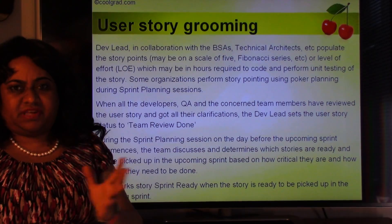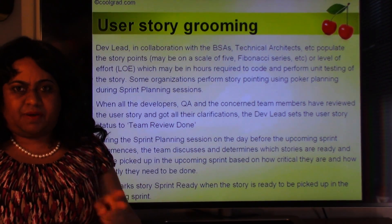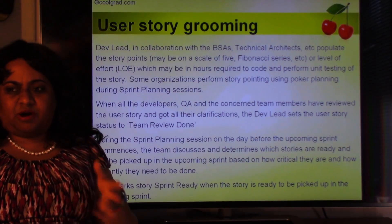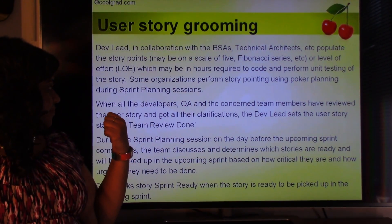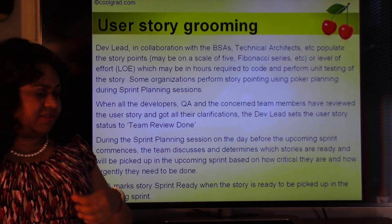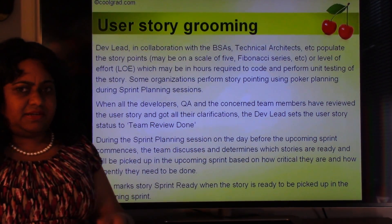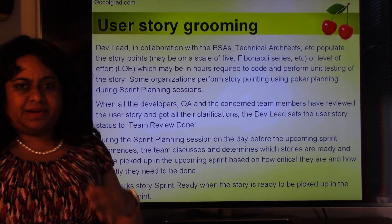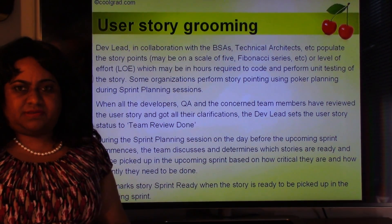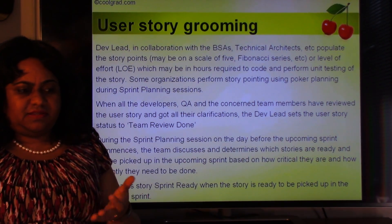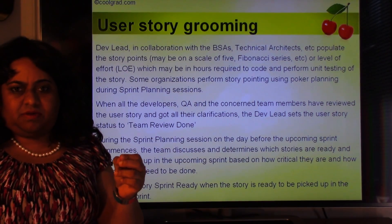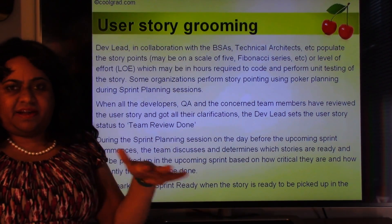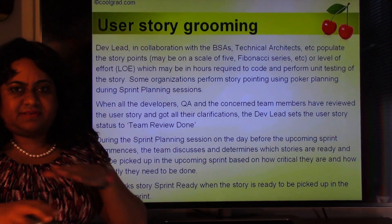Sometimes they directly put in hours — this might take 2 hours, 5 hours, 10 hours, or 30 hours, including development and testing. When all developers, QA, and concerned team members have reviewed the story and got their clarifications, the dev lead sets the user story status to 'team review done.' If they have doubts — like not understanding a particular object or specification — they get them clarified, arrive at a consensus, and the dev lead or BSA marks it as team review done.